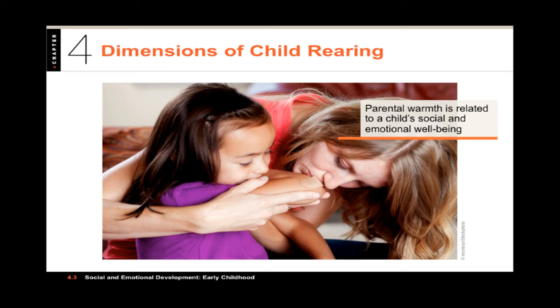Warm parents are affectionate towards their children — they hug, kiss, smile at them. They're caring, supportive, and less likely to use physical discipline. Cold parents, on the other hand, show few feelings of affection towards their children. They may complain excessively about them, or call their children naughty or problematic. You end up with a couple of combinations when you combine warm versus cold and restrictive versus permissive.